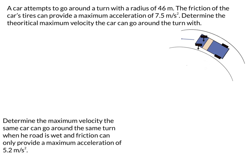All right, let's take a look at a simple example problem. A car attempts to go around a turn with a radius of 46 meters. So I know my R. The friction of the car's tires can provide a maximum acceleration of 7.5 meters per second squared. That's the centripetal acceleration because in this case, the force that allows a car to go around a circle is the force of friction here. So that must be the maximum acceleration. Determine theoretical maximum velocity the car can go around the turn with. So I went ahead and made my variable bank, and I'm going to use this centripetal acceleration equation here. AC equals V squared over R.